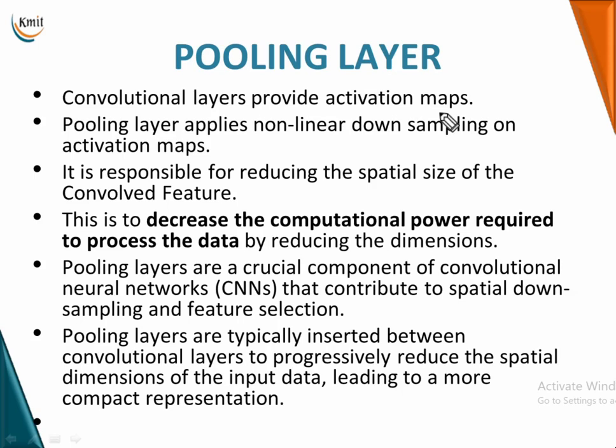When you want to go for non-linear downsampling, you will use a pooling layer. The pooling layer helps you reduce the spatial size of the feature map obtained after convolution. It is responsible for reducing the spatial size of the convolved features. Ultimately, you need to decrease the computational power required to process your data, and reducing the dimension of your data achieves that.